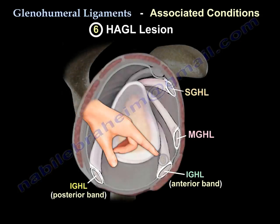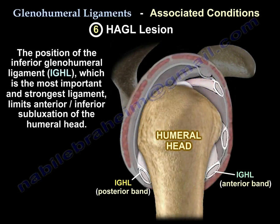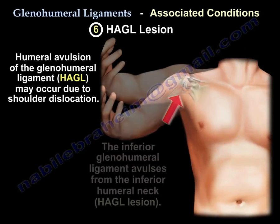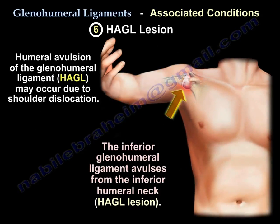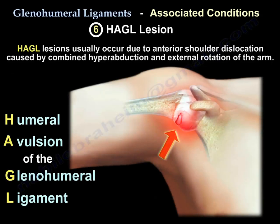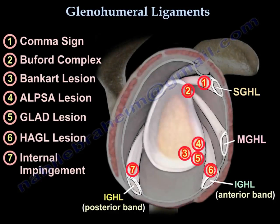The last lesion connected to the inferior glenohumeral ligament is the HAGL lesion. The anterior band of the inferior glenohumeral ligament is the most important and strongest ligament, limiting anterior-inferior subluxation of the humeral head. Humeral avulsion of the glenohumeral ligament may occur due to shoulder dislocation, typically caused by combined hyperabduction and external rotation of the arm. The capsule and ligament are avulsed from the inferior humeral neck. This concludes the summary of lesions associated with the glenohumeral ligaments.